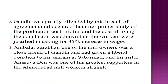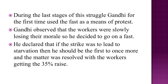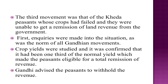Ambalal Sarabhai, one of the mill owners, was a close friend of Gandhi and had given a liberal donation to his ashram at Sabarmati. His sister Ansuya Ben was one of Gandhi's greatest supporters in the Ahmedabad mill workers' struggle. During the last stages, Gandhi for the first time used the fast as a means of protest. He observed that the workers were slowly losing their morale, so he went on a fast, declaring that if the strike was to lead to starvation he should be the first to suffer. The matter was firmly resolved with the workers getting a 35 percent raise.